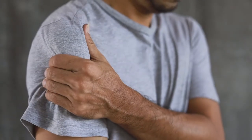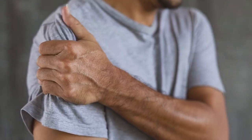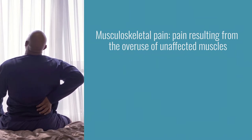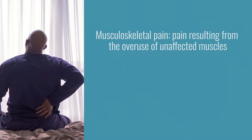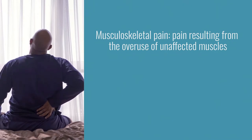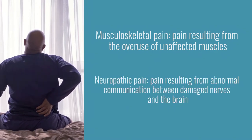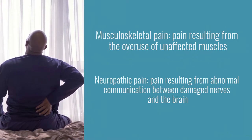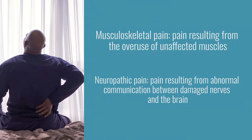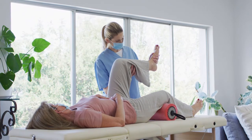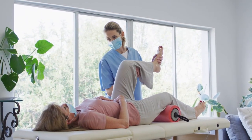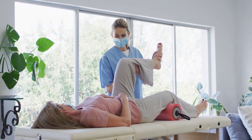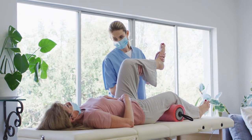Individuals with an SCI may experience pain from overuse of unaffected muscles — this is called musculoskeletal pain. For example, pain may occur in the arms due to wheelchair use. Additionally, patients with an SCI may suffer pain caused by nerve damage in the spinal cord. This is called neuropathic pain, which is when abnormal communication between damaged nerves and the brain results in pain. It is even possible that a patient feels pain in an area that otherwise has no sensation. Pain is a complicated issue, and patients may have to try different treatments before finding one that works. Physical therapy, massages, or acupuncture, as well as painkillers, may be used to treat musculoskeletal pain.